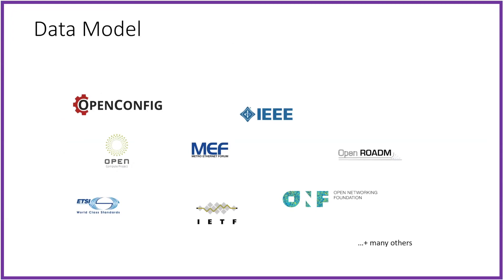Data models are defined by standards bodies, forums, or consortiums — places where different vendors and operators get together. So the Metro Ethernet Forum would create the model that defines what Ethernet services look like: E-Line, E-LAN, and E-Tree services. MEF will define the minimum requirements necessary to support the service and may add optional fields — both optional and mandatory fields. They're usually used for configuration, but operational data is also defined. The standards body creates the model for its particular services.